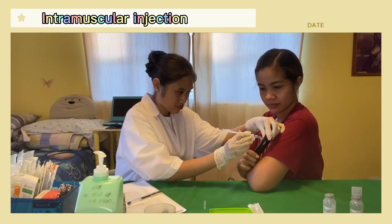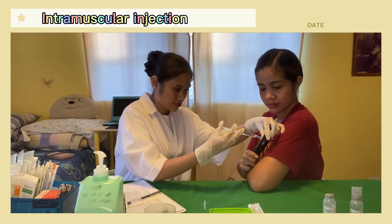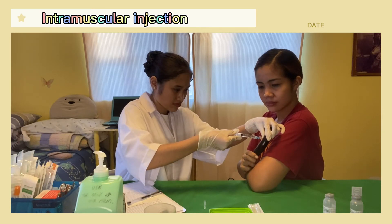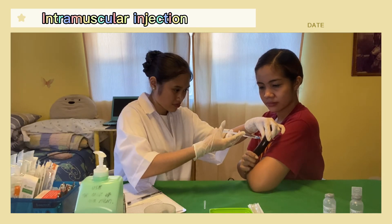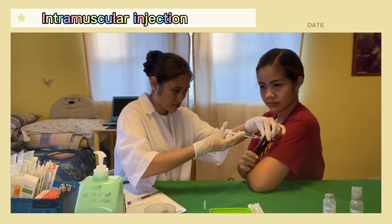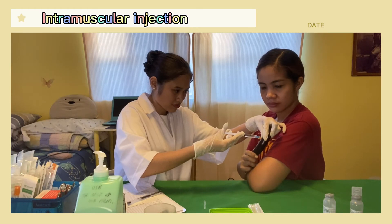Inject the needle quickly and firmly at a 90 degree angle. Grasp the lower end of the syringe with the non-dominant hand and position the dominant hand to the edge of the plunger; do not remove the syringe. Pull back on the plunger to ascertain if the needle is in a vein. If no blood appears, slowly inject the medication.